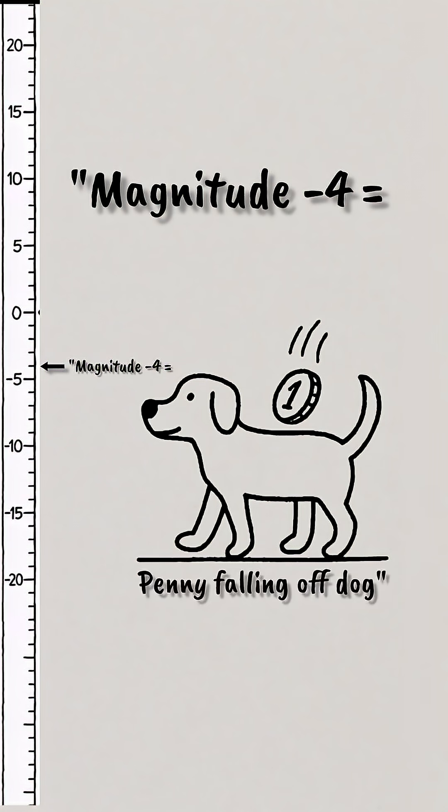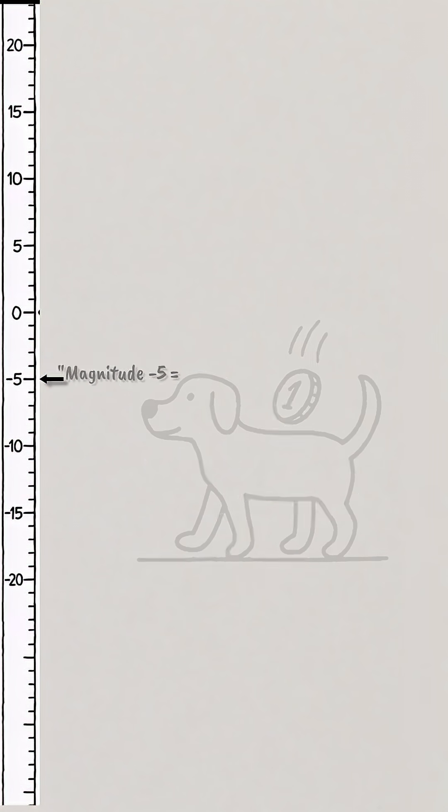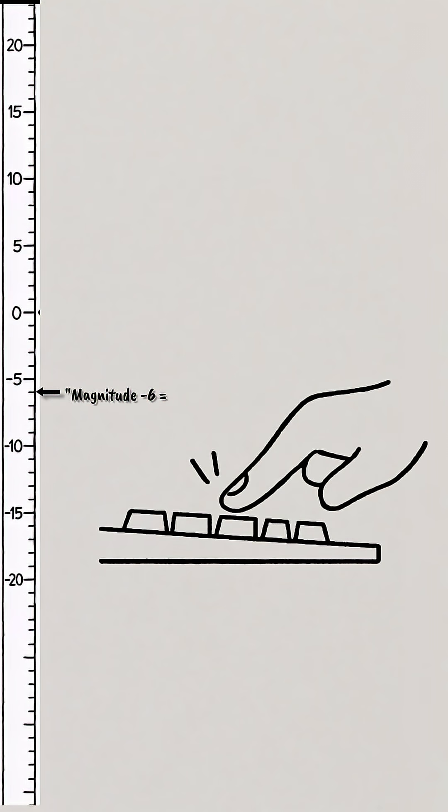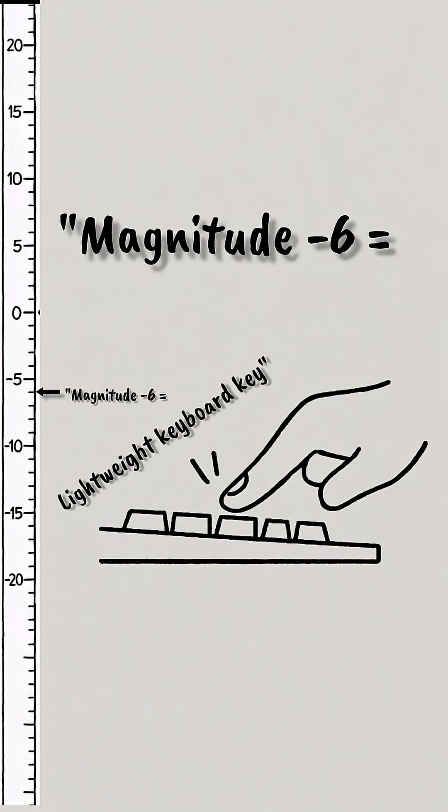Magnitude negative four is like a penny falling off of a dog. Magnitude negative five is a key press on an IBM model mechanical keyboard. Negative six is a key press on a lightweight keyboard.